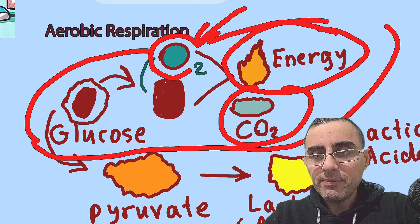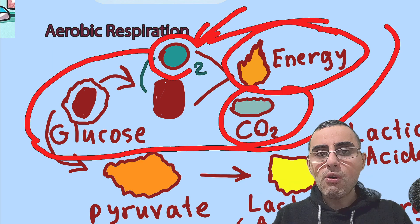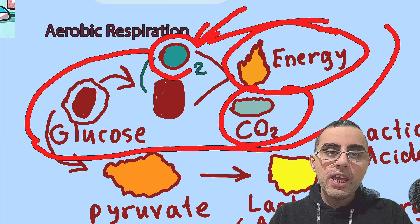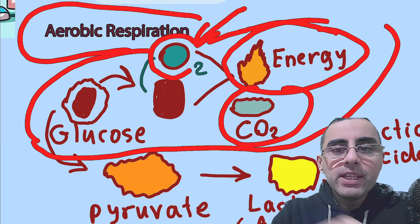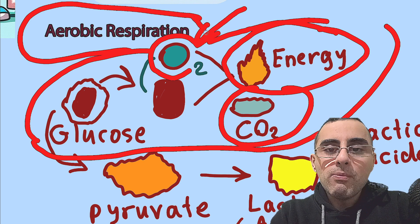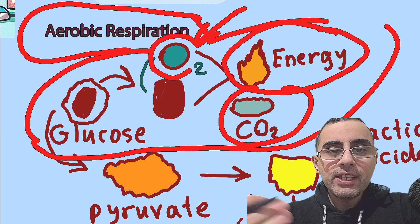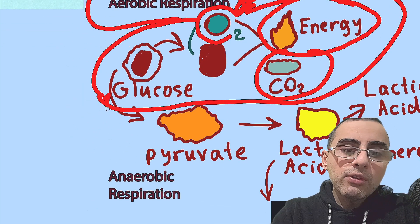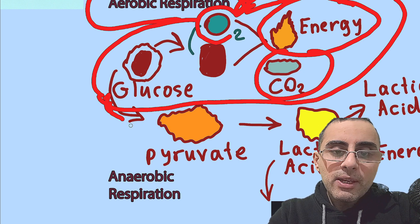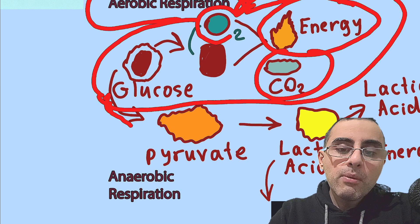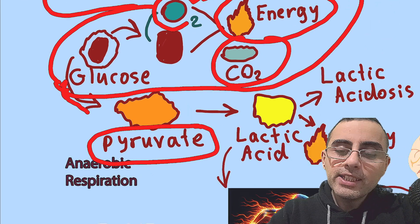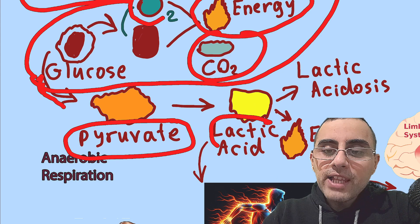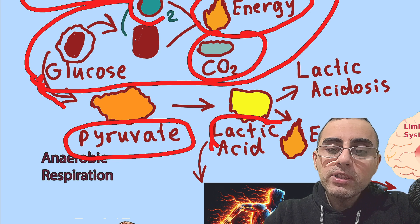We always undergo aerobic respiration at rest. But when working out intensively — lifting weights or sprinting — the body requires more and more energy. Aerobic respiration is effective and efficient but slow, so you need faster energy. That fast energy comes from the direct breakdown of glucose, called glycolysis, which produces pyruvate.